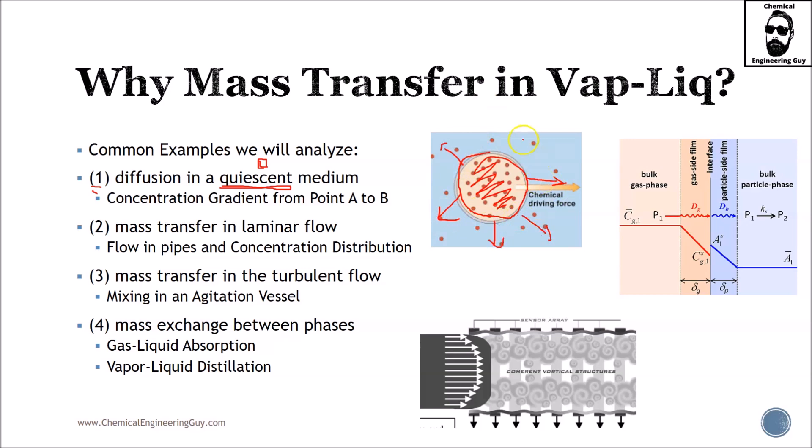Number two: mass transfer in laminar flow. Even though we might not want it, if we have a pipe and several materials flow through, they are going to eventually mix. We're going to see concentration distribution examples.